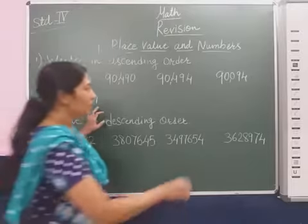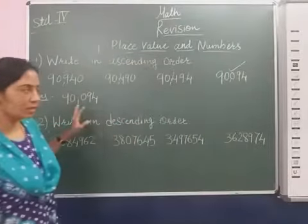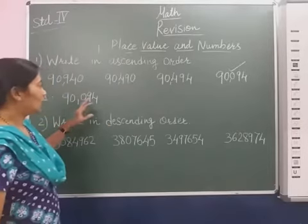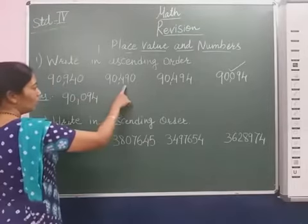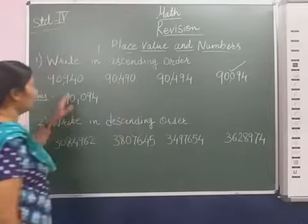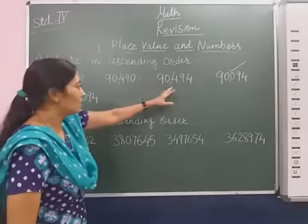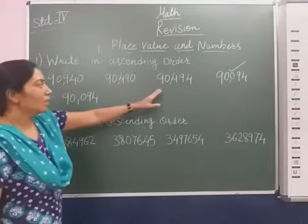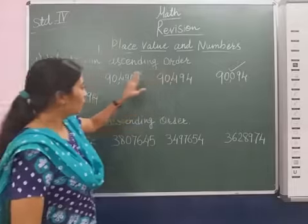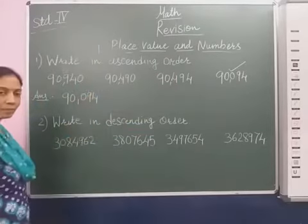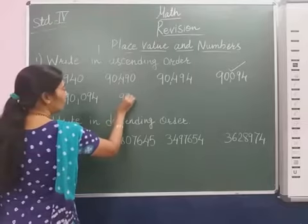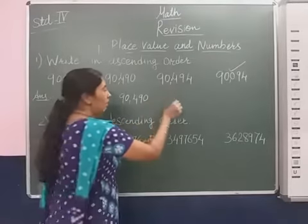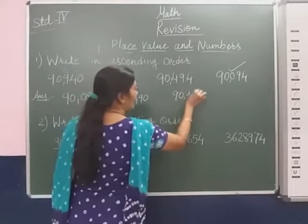So 90,094 is the smallest number. Now we compare the remaining 3 numbers. The 100s place values are 400, 400, and 9. So 90,940 is the greatest number. Now we compare between 90,490 and 90,494, and the smaller of these two is 90,490, then 90,494.